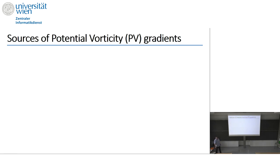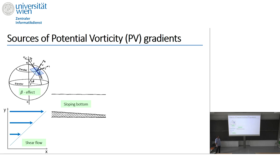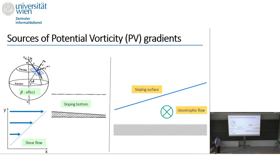This is also about sources of potential vorticity gradients. The familiar beta effect, sloping bottom, and shear flow all generate PV gradients. The question we also address is: if we add the geostrophic flow — uniform or non-uniform — associated with a sloping surface, what are the implications?